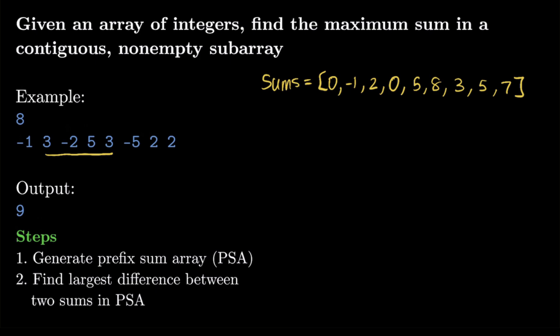Now we need the second step: find the largest difference between two sums in the sums array. One way would be a nested brute force — searching through the list for every index after the starting index — but this would make our algorithm quadratic in runtime, which is too slow. We want to do better than that.